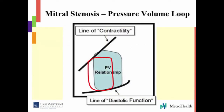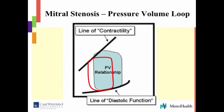This is the pressure-volume loop. The normal loop shows your stroke volume. The red pressure-volume loop is what happens in patients with mitral stenosis — it's shifted to the left because the preload is decreased in the left ventricle. Notice also that the stroke volume here is decreased compared to the normal stroke volume. The contractility line is unchanged and the diastolic filling line is unchanged. All this happened because you moved the preload down, shifting the curve to the left.